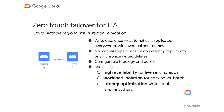Bigtable enables you to write once to a single replica and have it automatically replicated everywhere with eventual consistency. There are no manual steps to ensure consistency, repair data, or synchronize writes and deletes. It gives you the ability to have a configurable topology and policies on how to route data both by the read and write side to different replicas. Common use cases for the replication system are high availability for your live serving apps, workload isolation where you have both user serving and batch workloads running against the same database, or latency optimization to write locally to a replica closer to you but then read that data everywhere.